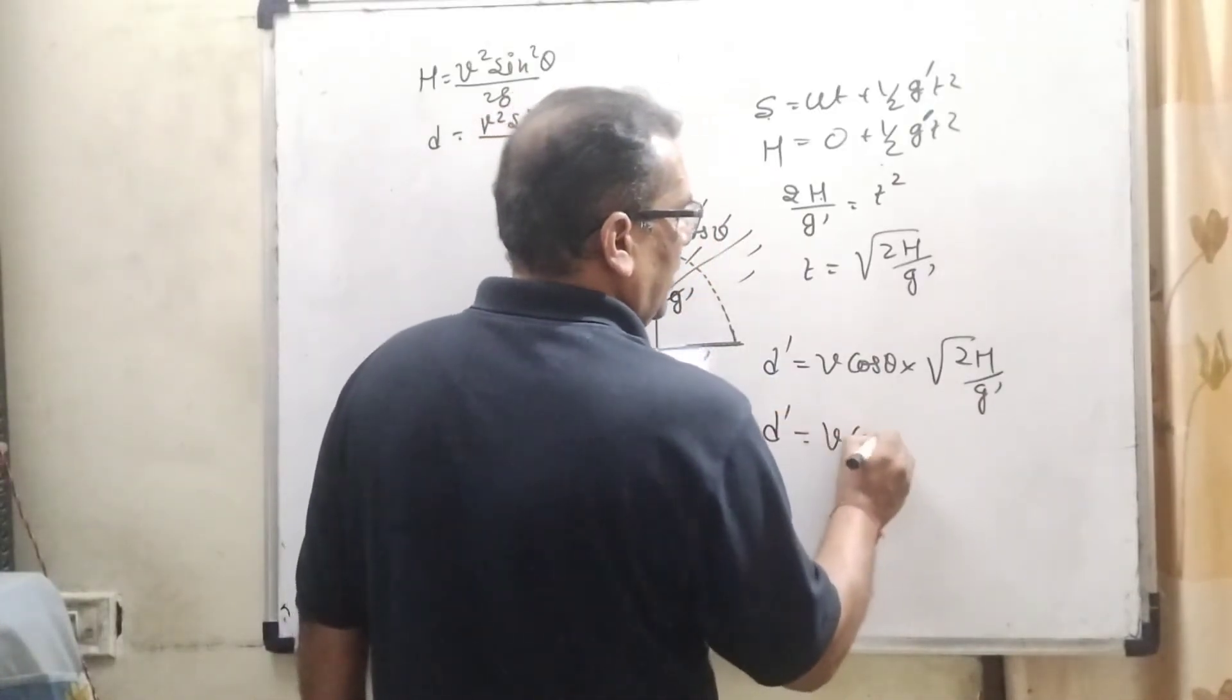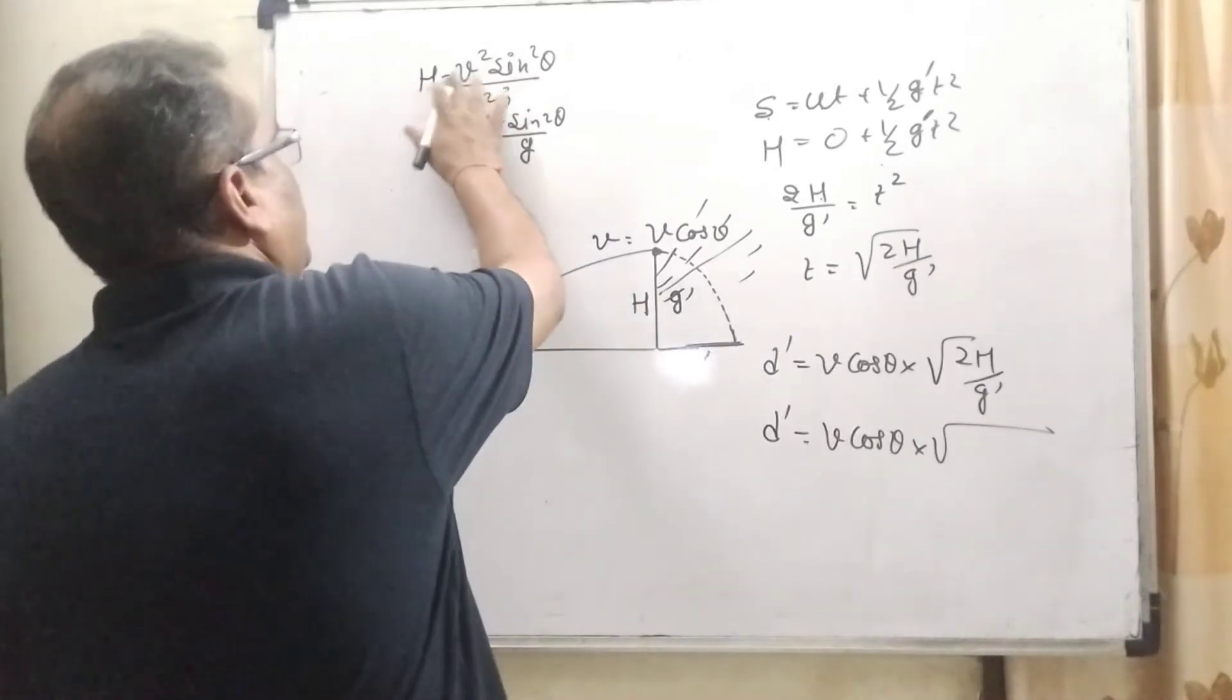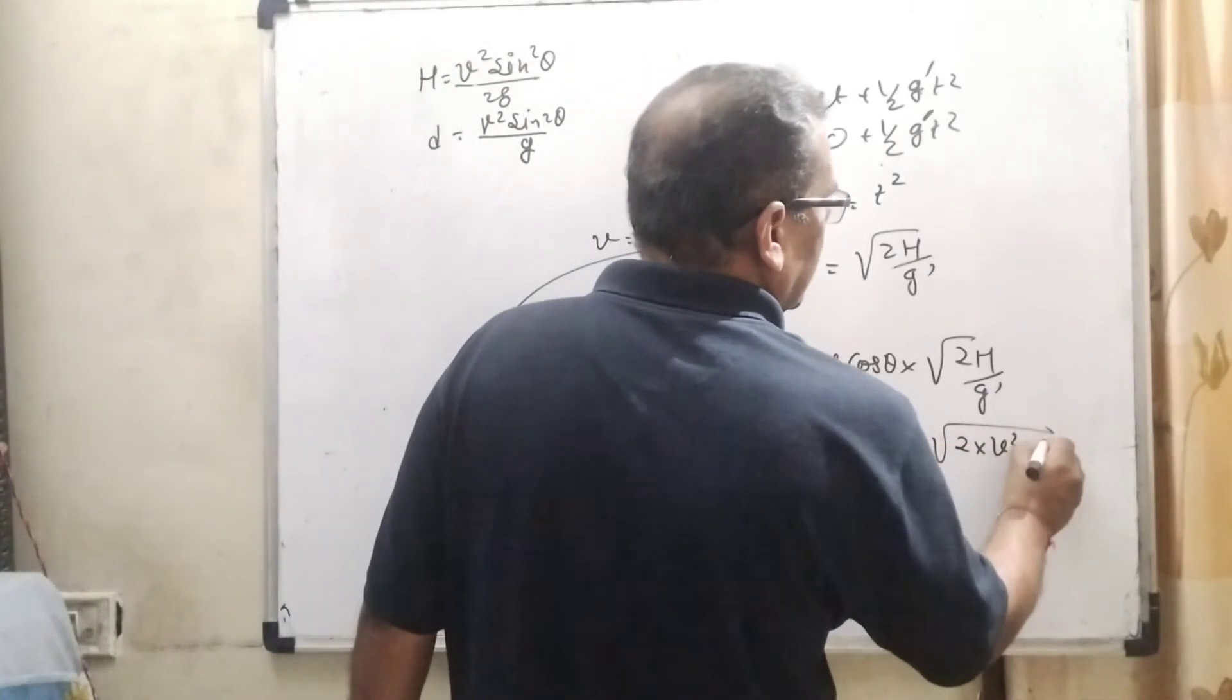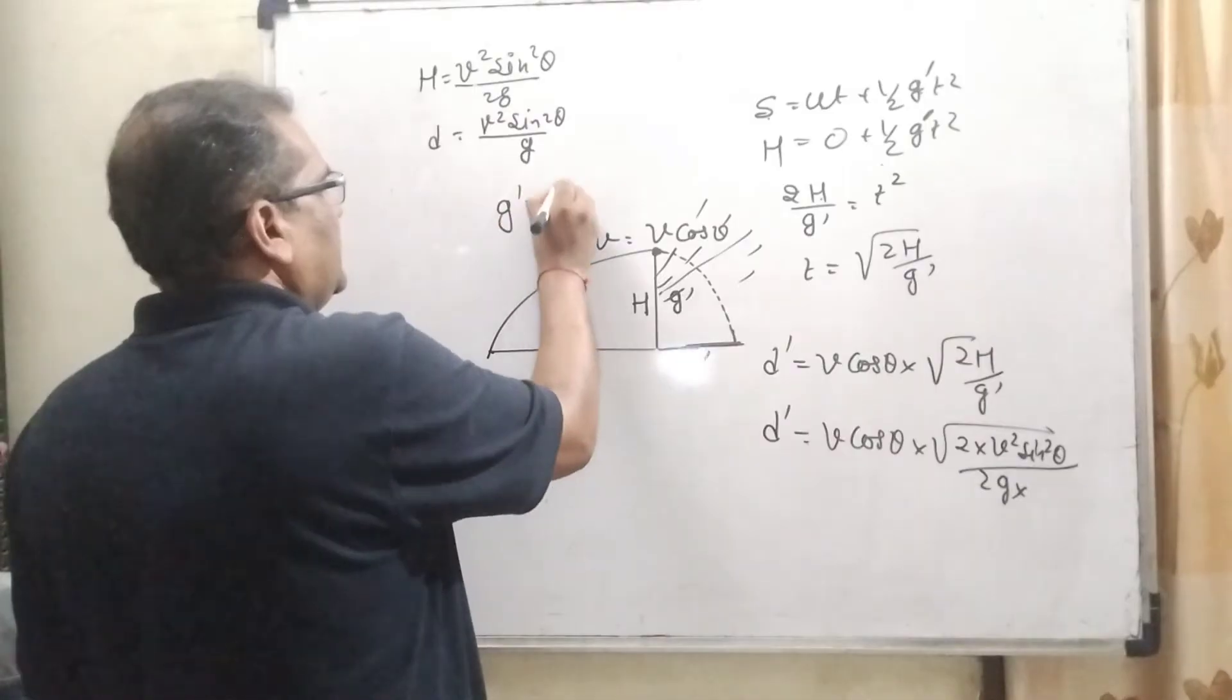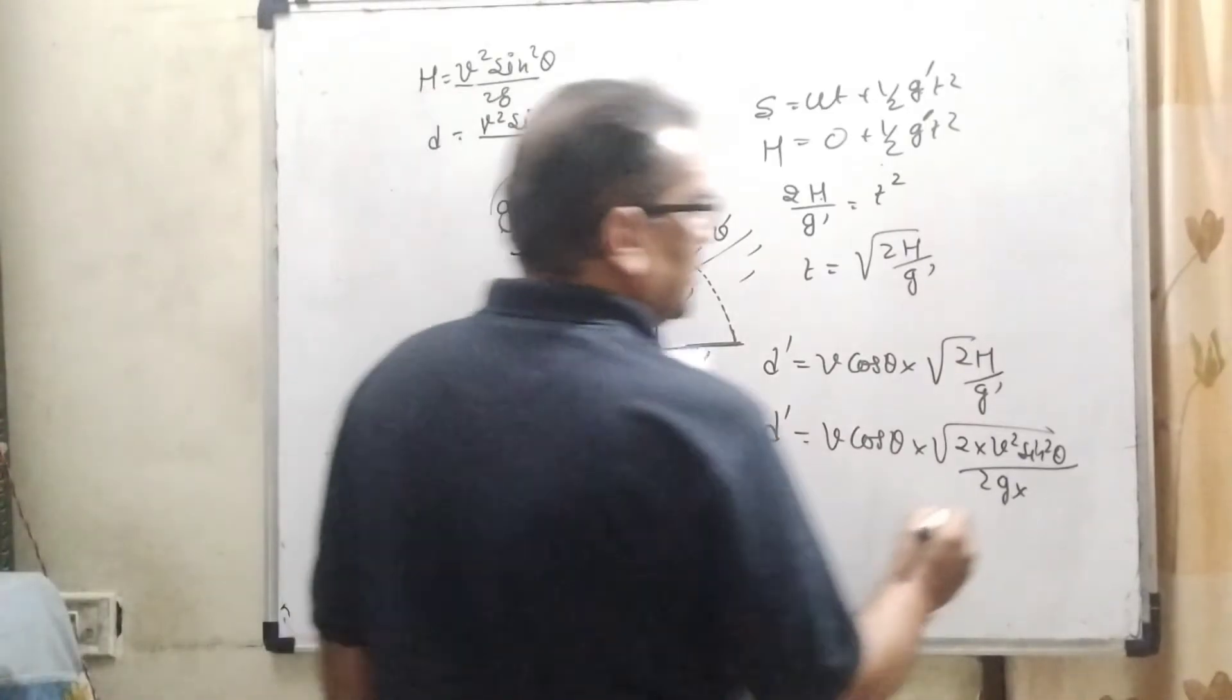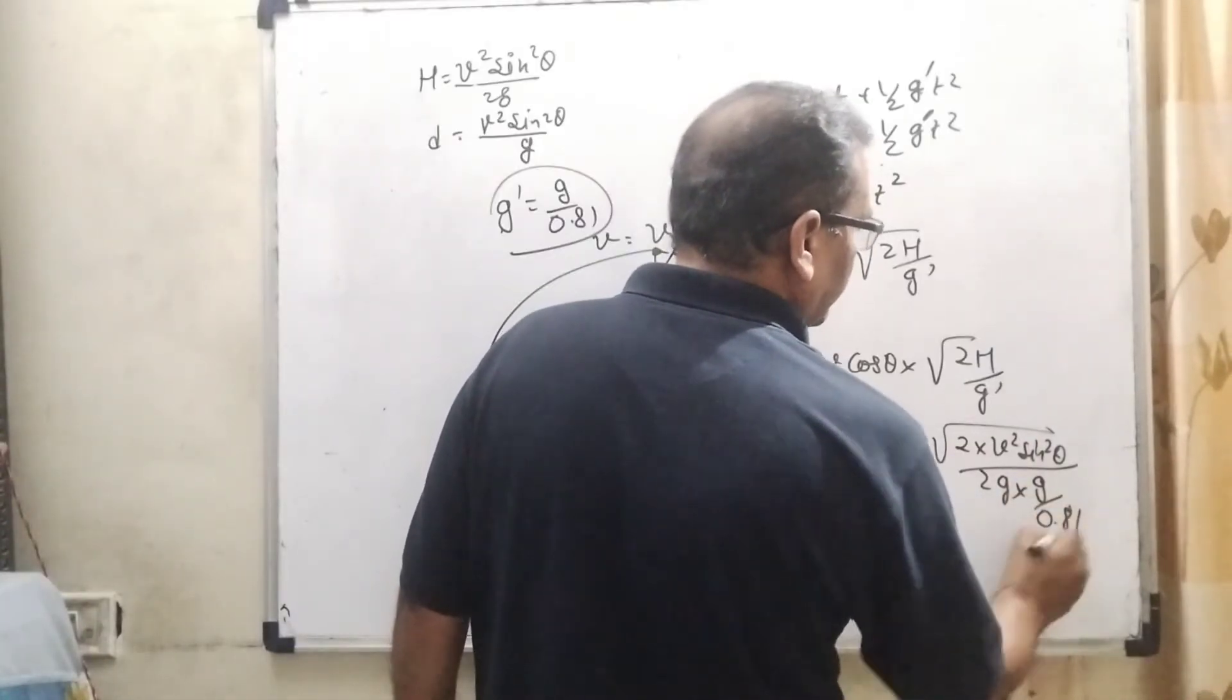Then substitute the value of maximum height. What is the maximum height? H can be written as V squared sine squared theta by 2g, and the value of g dash is given g by 0.81 in the question. Therefore, substitute this value g by 0.81.